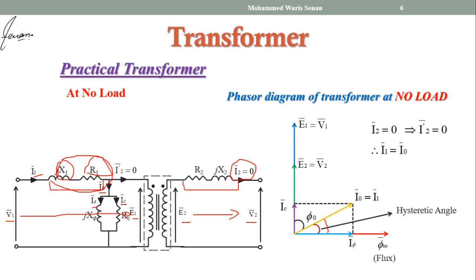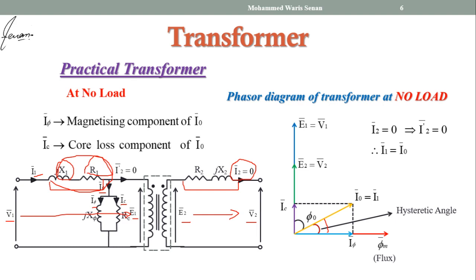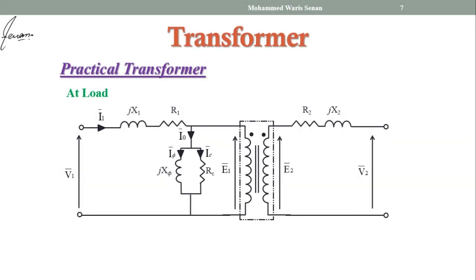We have learned that there are two components of no-load current: the magnetizing component and the core loss component. At no-load condition, the current I0 is responsible for production of flux as well as feeding the core loss. Now, after drawing the phasor diagram on no-load, we will draw the phasor diagram of transformer on load.